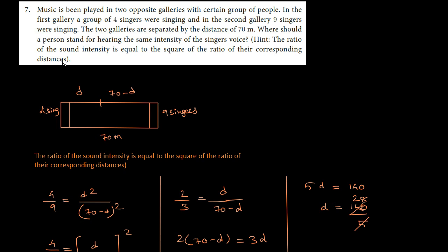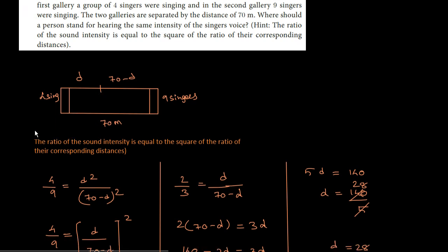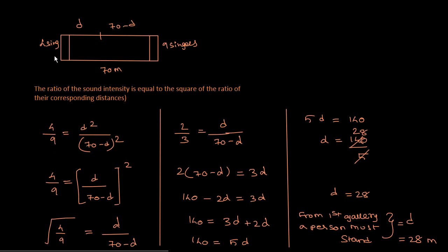The ratio of sound intensity is equal to the square of the ratio of the corresponding distances. The ratio of sound intensity is 4 by 9, which equals d squared divided by (70 minus d) squared.